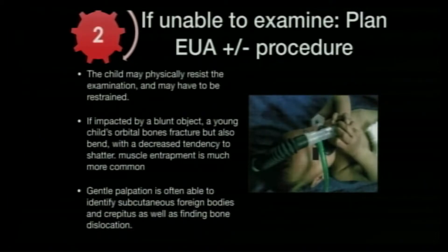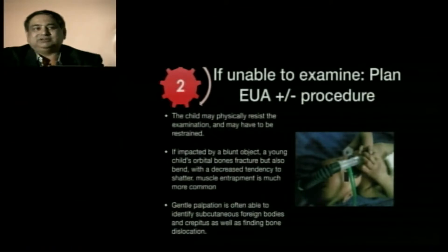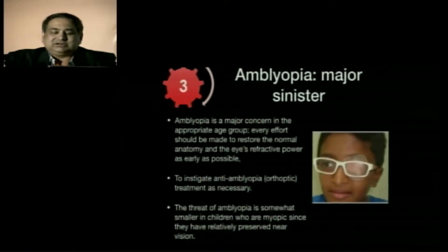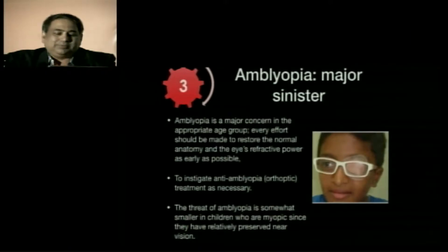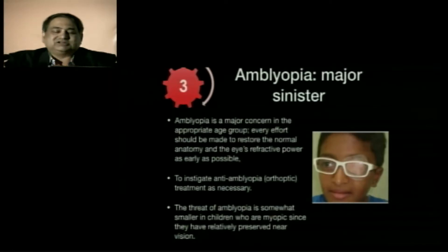Orbital bones in children tend to bend, and the chances of muscle entrapment are much higher compared to adults. Before subjecting them to anesthesia, do a gentle palpation of the rim. In one case, before doing EUA, we identified frontal parietal fractures. It is important to examine the baby as a whole. Amblyopia is a major concern — managing it with proper refractive correction as early as possible and initiating anti-amblyopic measures are very much required.